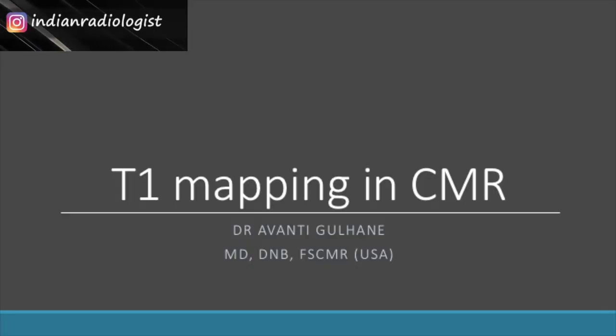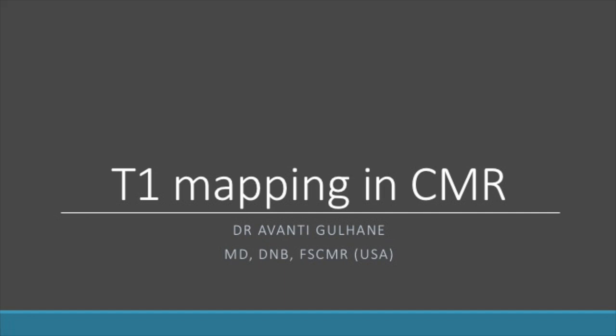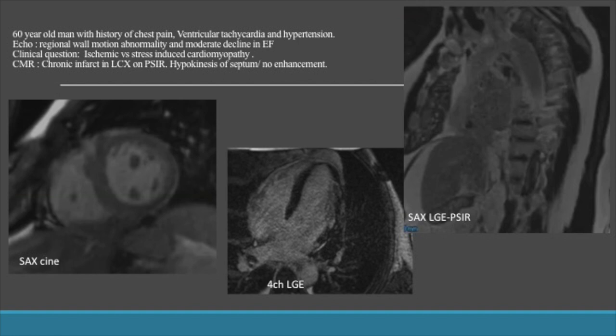Let us begin by discussing a case we had a few days back where T1 mapping helped establish the diagnosis and solve the diagnostic dilemma. This was a 60-year-old man with a history of acute chest pain, ventricular tachycardia, and hypertension. Echo was done and showed regional wall motion abnormalities and a moderate decline in ejection fraction. The clinical question was whether this patient has an ischemic versus a stress-induced cardiomyopathy.